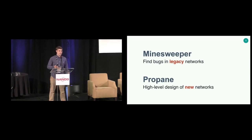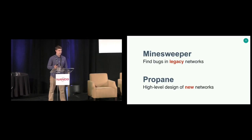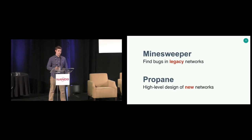In the rest of the talk, I'm going to describe two tools we've been building to find and prevent these kinds of bugs. The first is Minesweeper, a new open source tool for finding bugs in legacy networks. The second is Propane, which takes a top-down approach — it lets you design new networks at a very high level and then generates all of the low-level configurations for you.